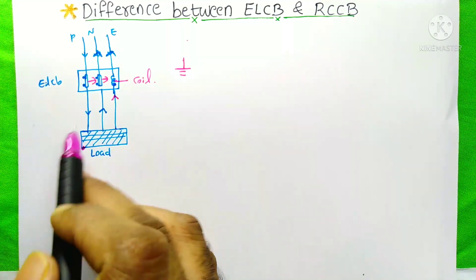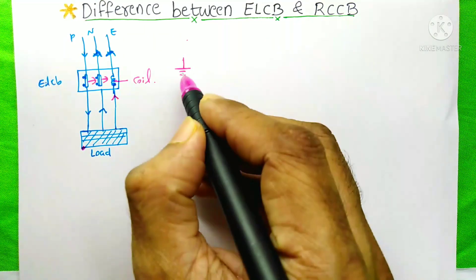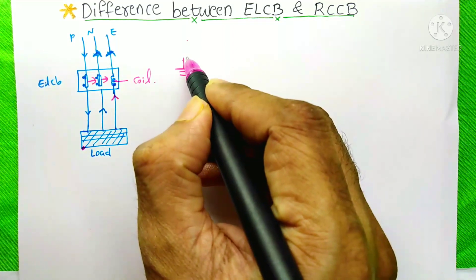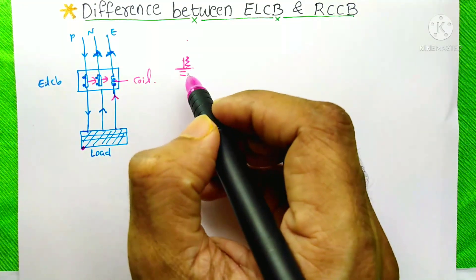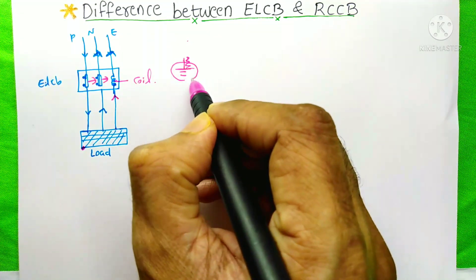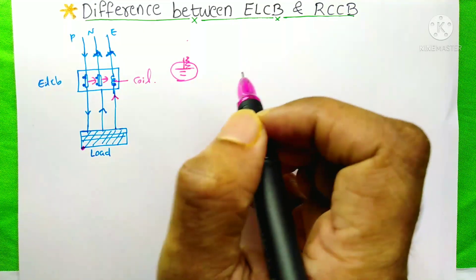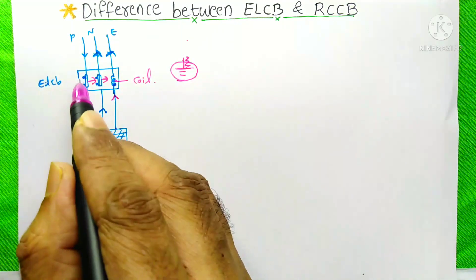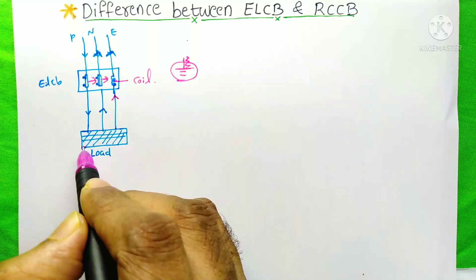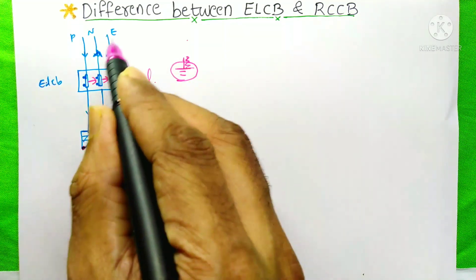There are some problems related with this ELCB. Suppose at your house, your earth connection is broken, or your earth bit loses the property of good earthing. At that time, even if this phase touches this body, the current will not go through this earth.